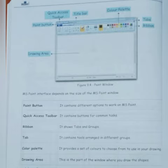We will read all the components one by one. First one is paint button. It contains different options to work on MS Paint. The second one is quick access toolbar. It contains buttons for common tasks.